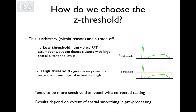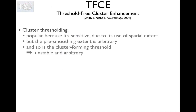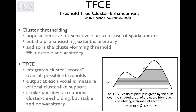In general, cluster-based statistics are popular because they're more sensitive than voxel-wise corrected testing, but the results depend on the cluster forming threshold and also on the extent of spatial smoothing and preprocessing. An attempt to fix or alleviate this is something called TFCE, Threshold-Free Cluster Enhancement. What TFCE does is it doesn't really form clusters — it goes through all the voxels and for each and every voxel it returns a cluster enhanced value.